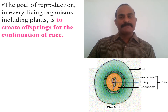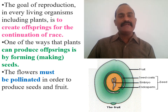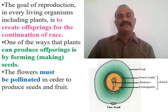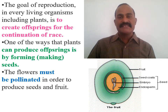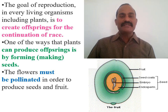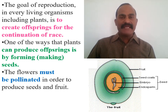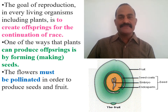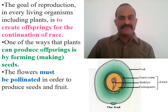Seed development is the goal of reproduction for every angiospermic plant. Every organism creates offspring for the continuation of race, genes, and existence. One of the major ways of reproduction in plants is the production of offspring by formation of seeds that are enclosed within the fruit. Flowers must be pollinated in order to produce seeds and fruit, because through pollination the male gametes are transferred to the female gamete, and then only fertilization — and after fertilization, the development of seed, fruit, embryo, and endosperm — is possible.